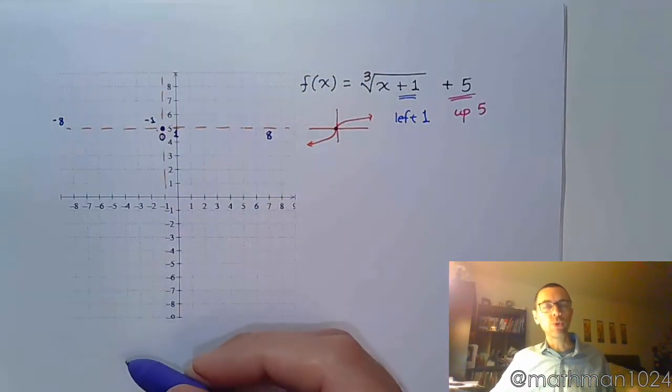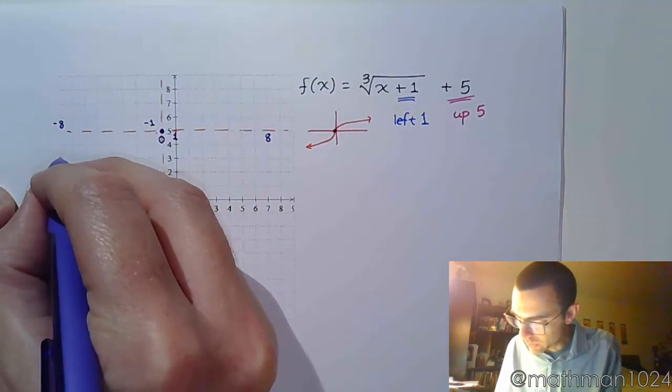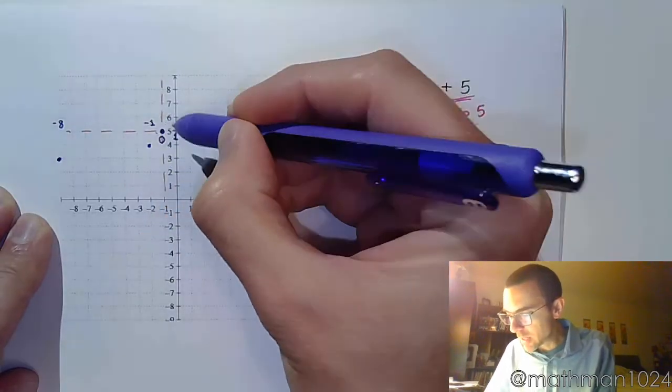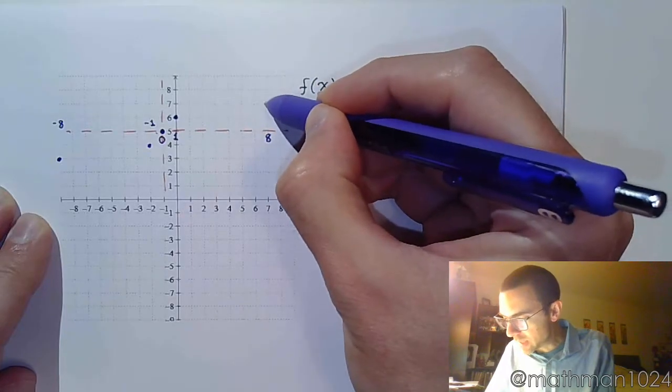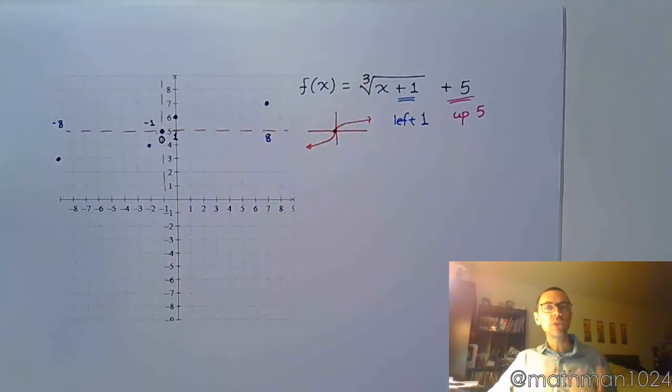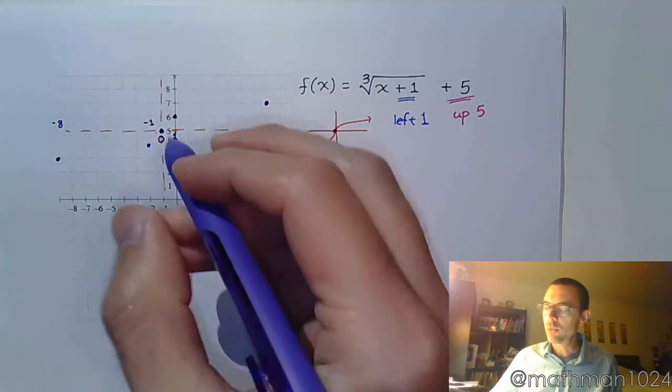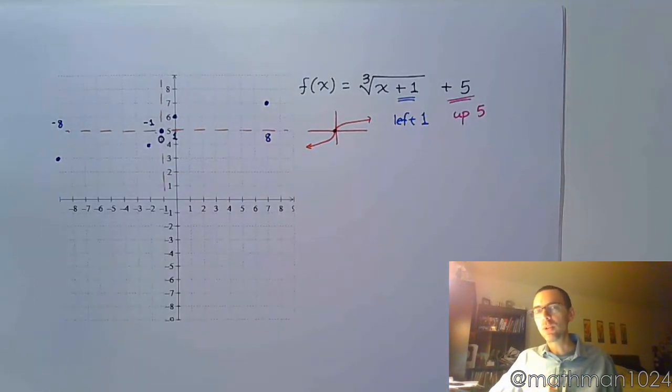So think about what your cube root shape looks like. The cube root of negative 8 is negative 2. The cube root of negative 1 is negative 1 and 0. The cube root of 1 is 1. And the cube root of 8 is 2. So I'm still plotting those same key points. But instead of plotting them relative to the origin, I'm plotting them relative to this new point. And by knowing those key points, I don't have to recreate and get a brand new set of values in a t-table.